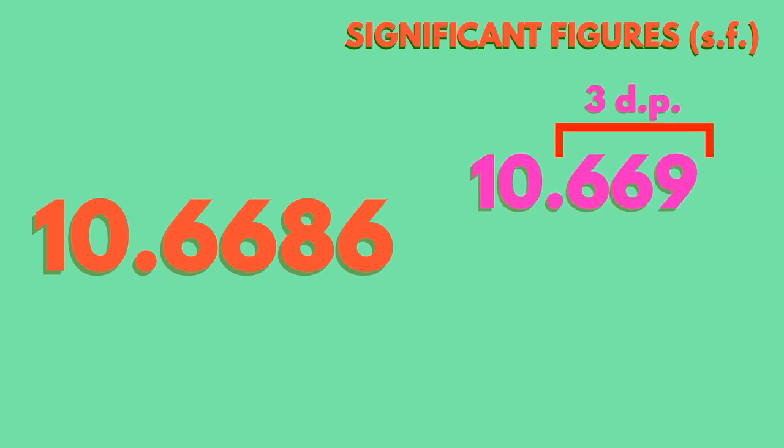Sometimes we may be required to round a number to a significant figure rather than to a whole number or to a decimal place, and we must be aware of the difference. Rounding numbers to a given number of decimal places means that you start the rounding at that number of places to the right of the decimal point. Rounding a number to significant figures can be done before or after the decimal point.